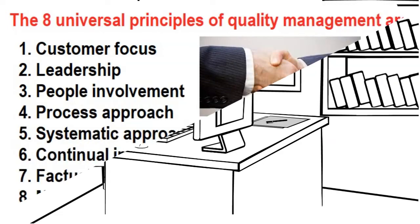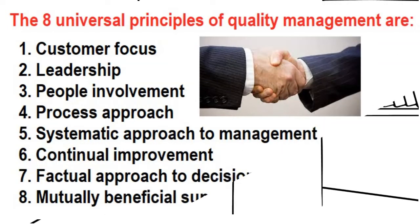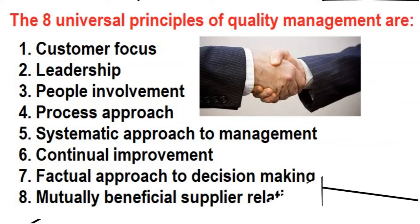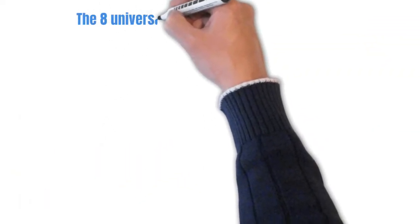Six, continual improvement. And seven, factual approach to decision making. And the last one, mutually beneficial supplier relations.